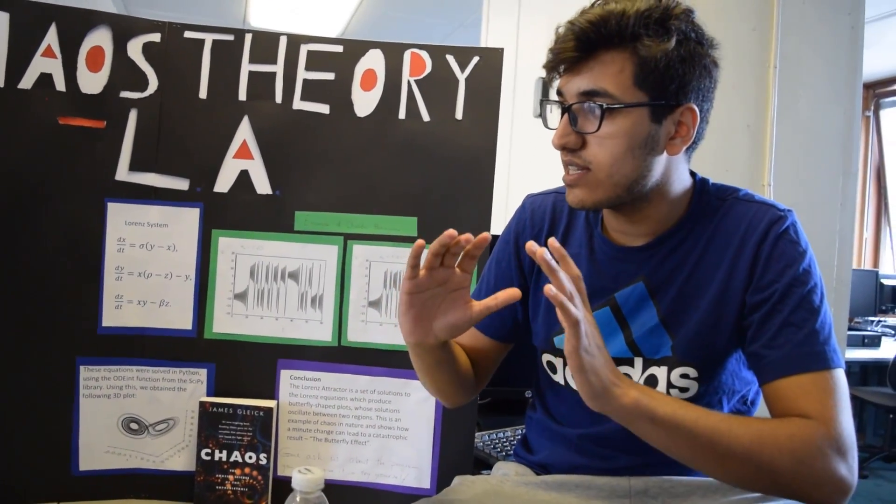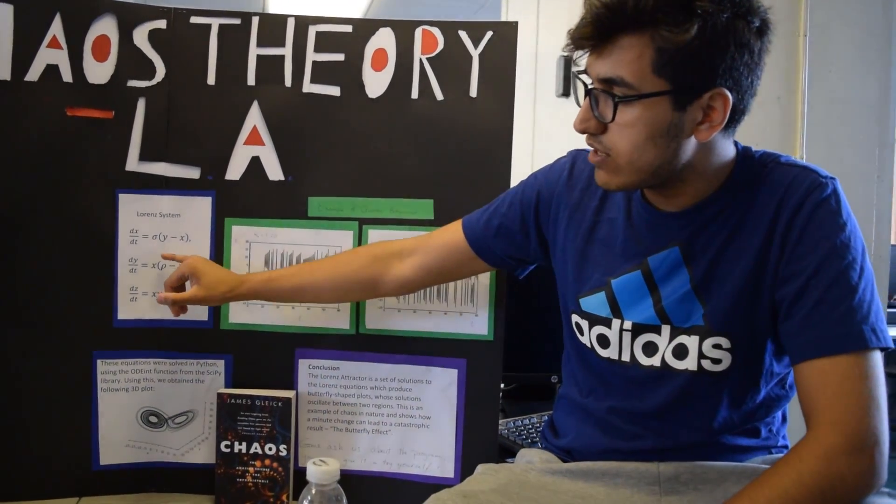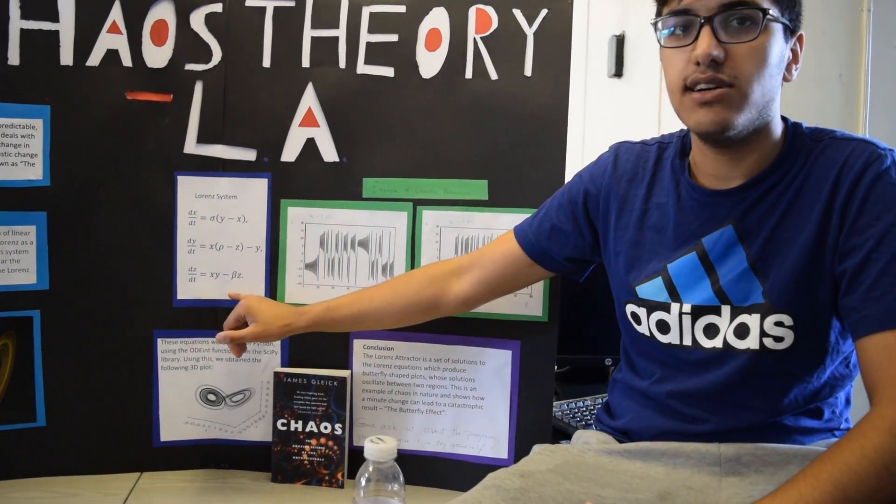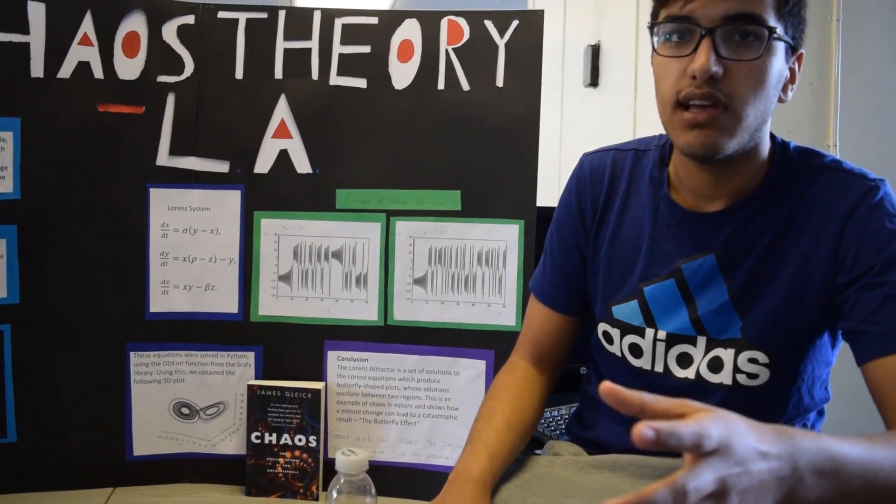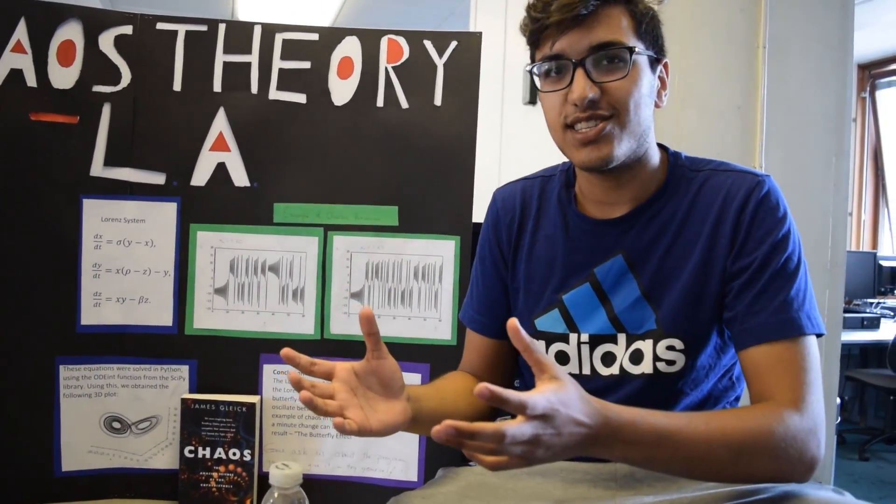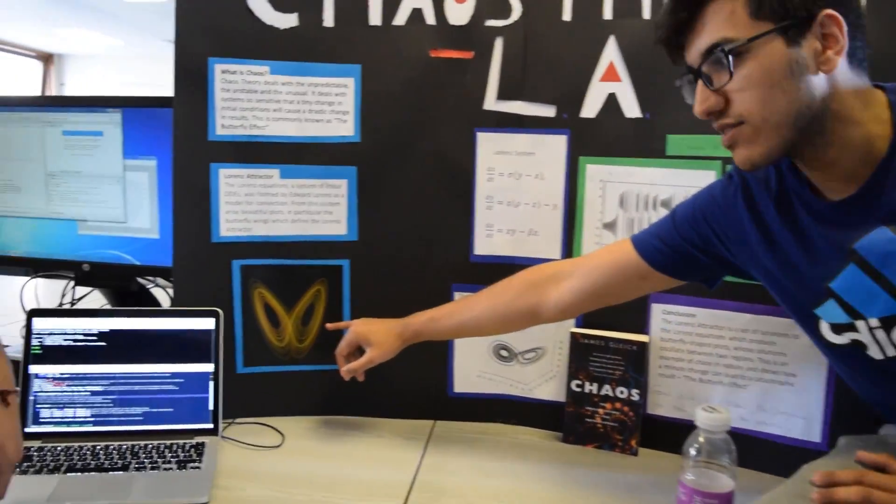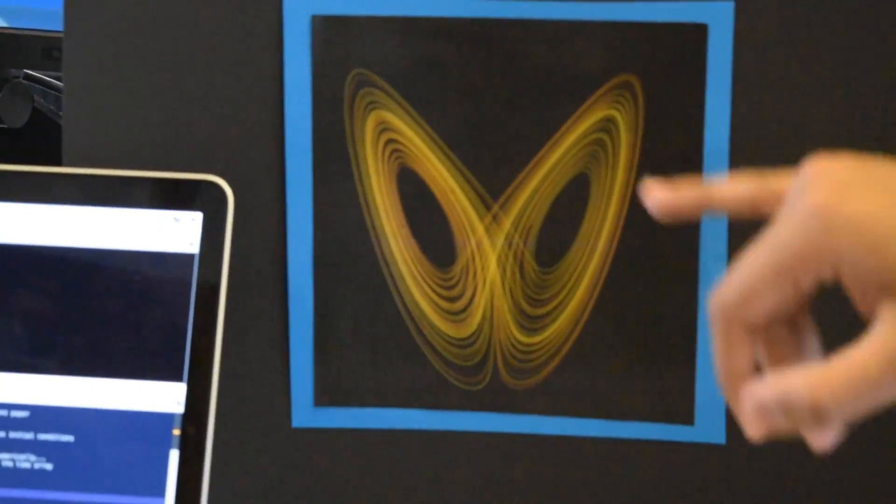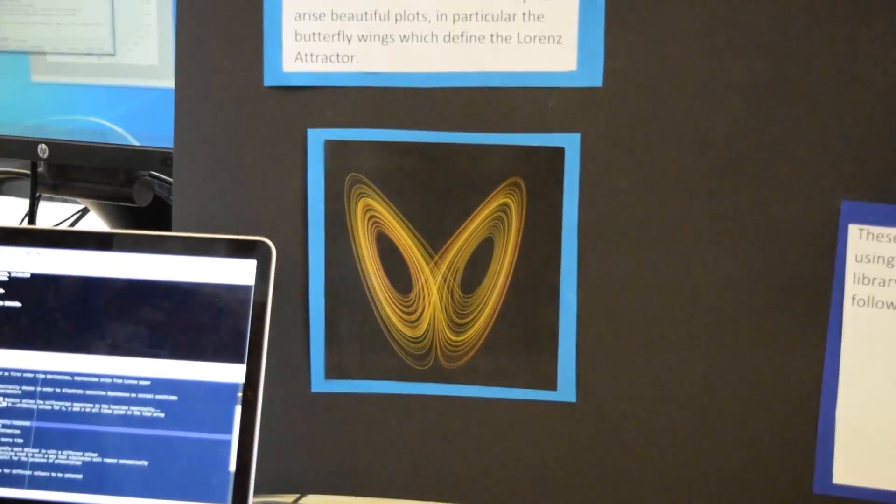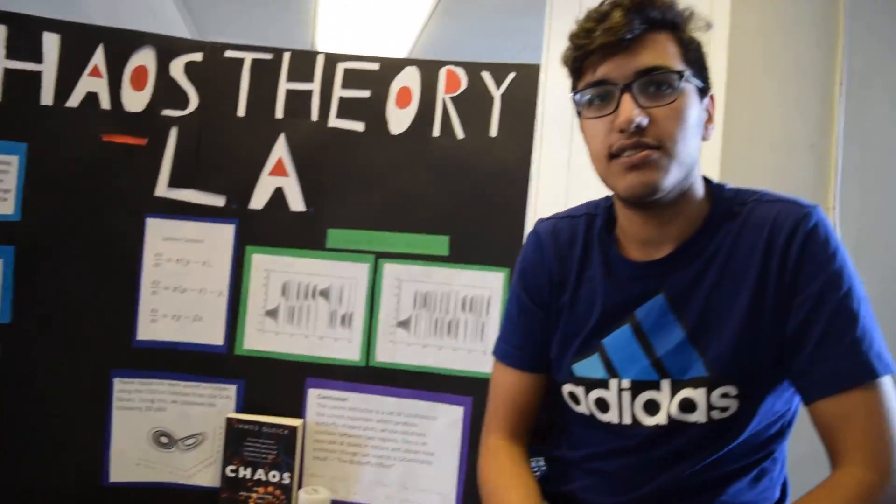The Lorenz Attractor itself is that certain values of rho, sigma and beta will give you chaotic systems, and certain chaotic systems will give you these butterfly wings. These butterfly wings are the commonly defining feature of the Lorenz Attractor, and that in a nutshell is the Lorenz Attractor.